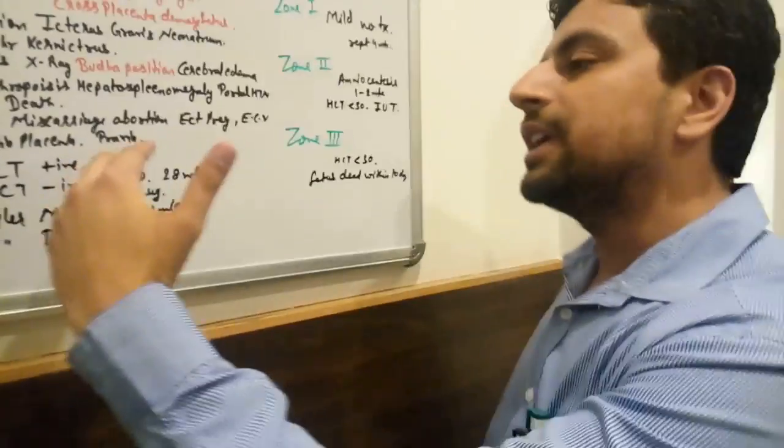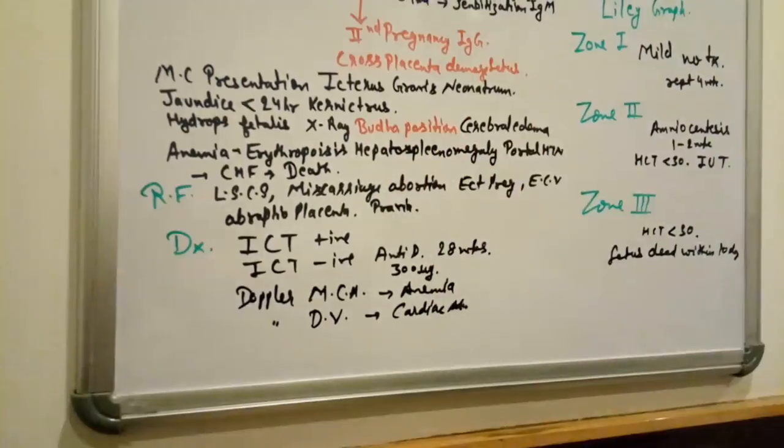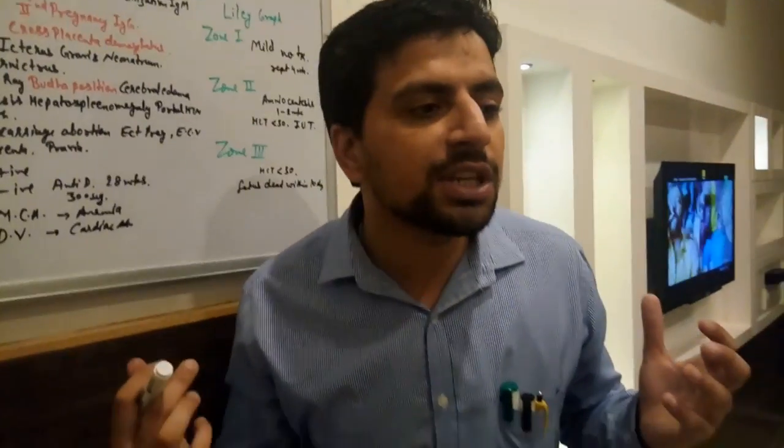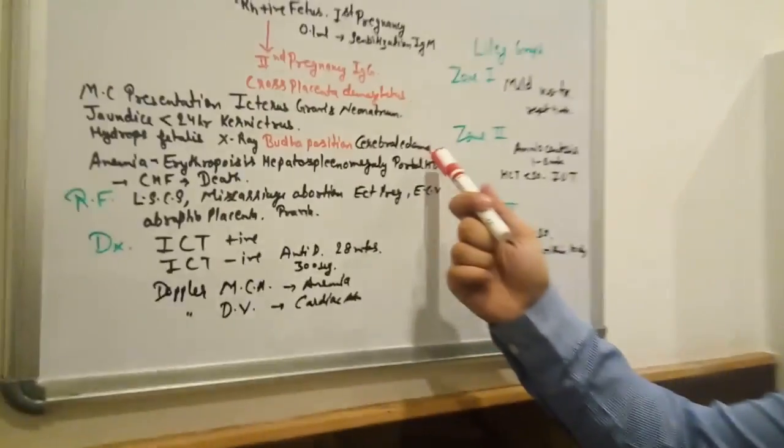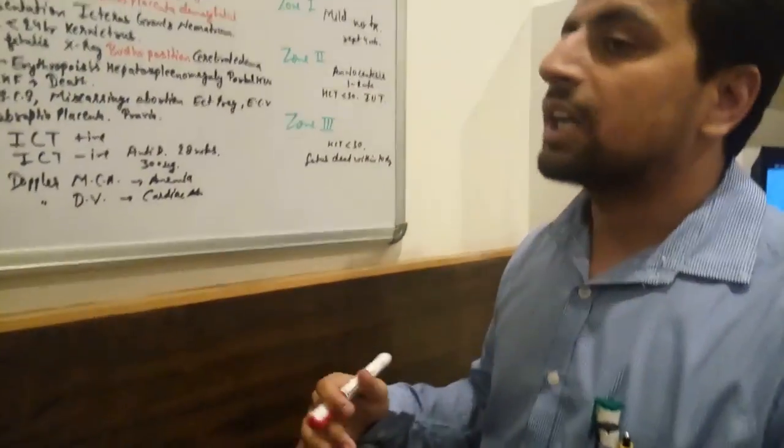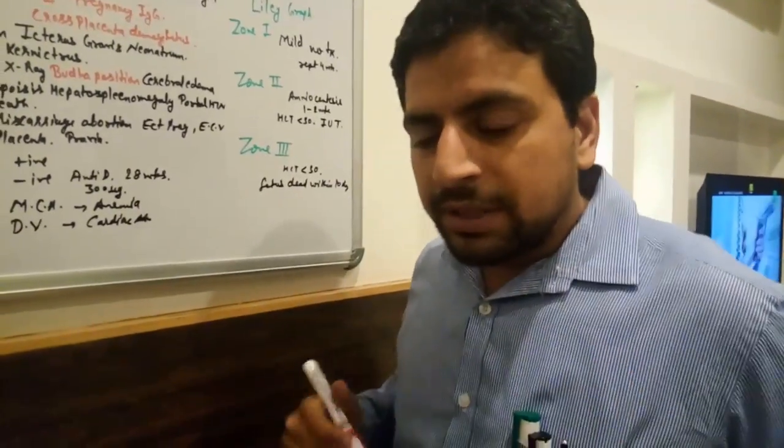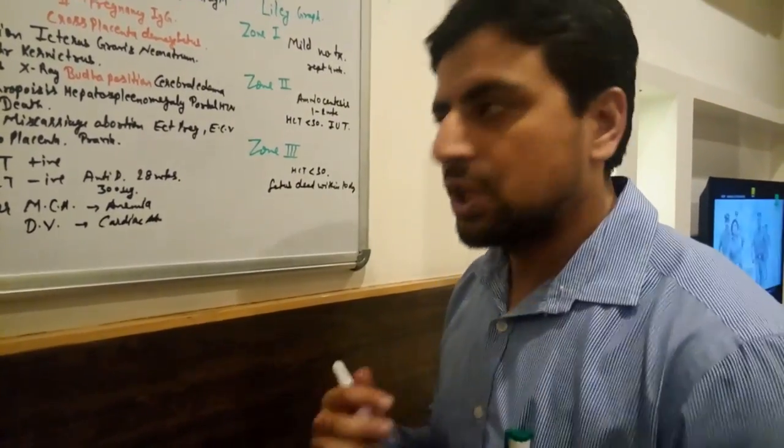On x-ray we see Buddha position. We see this because there is cerebral edema. It causes anemia, erythroblastosis, and there is breakdown of RBCs with lots of unconjugated bilirubin.